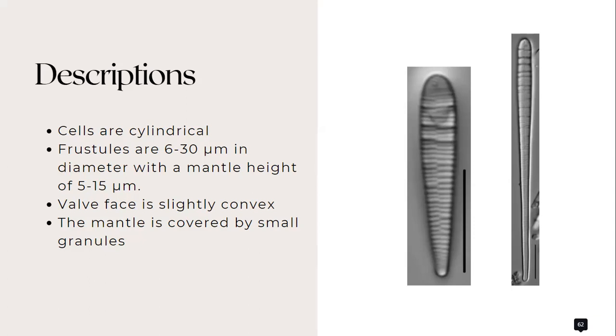The valve face is slightly convex and covered with small spines. The mantle is covered by small granules and the frustules have a loculate structure. Numerous rimoportulae are scattered over the valve face and mantle and one row of rimoportulae occurs on the mantle edge.